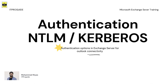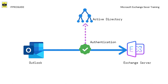Exchange Server provides different ways to authenticate clients for Exchange Server access. Active Directory is where the identity is authenticated, and Exchange has to get the user authenticated from Active Directory in order to provide access. Outlook Anywhere and MAPI over HTTP are the two protocols we can use to connect Outlook clients to Exchange. Here we focus on the authentication part.